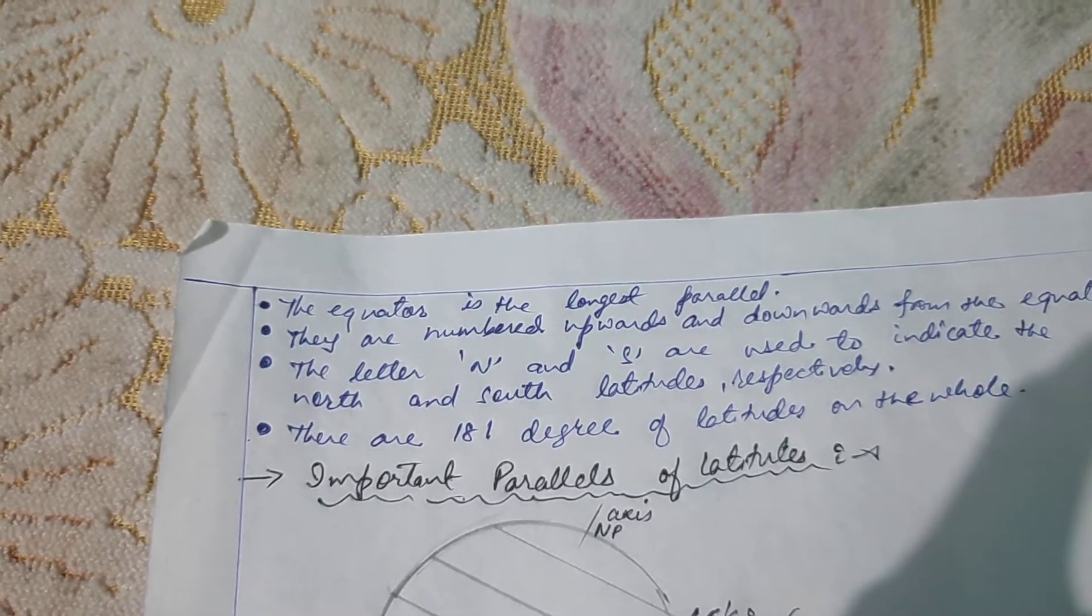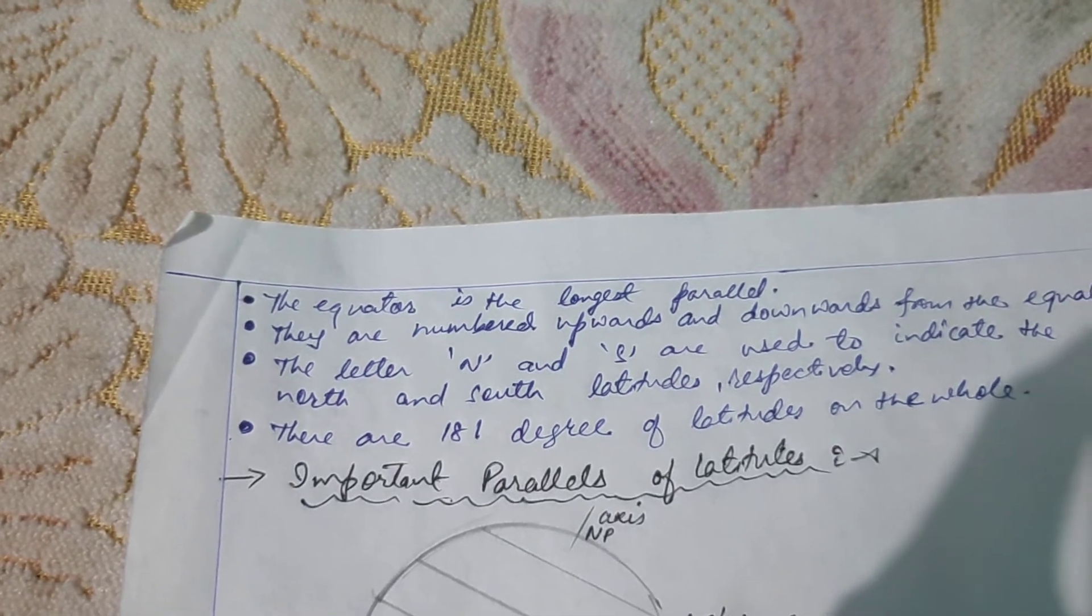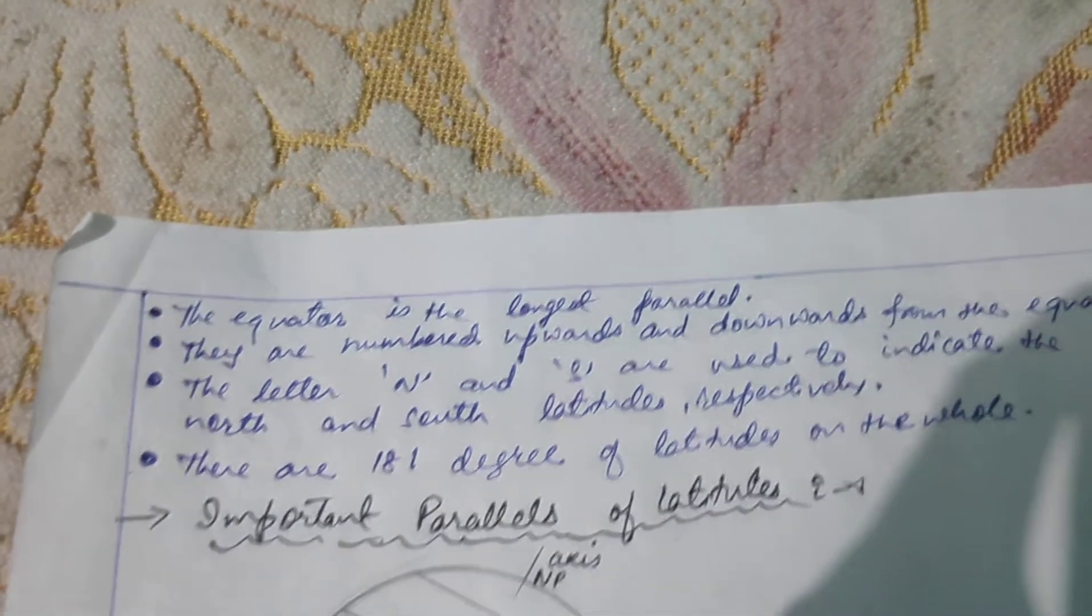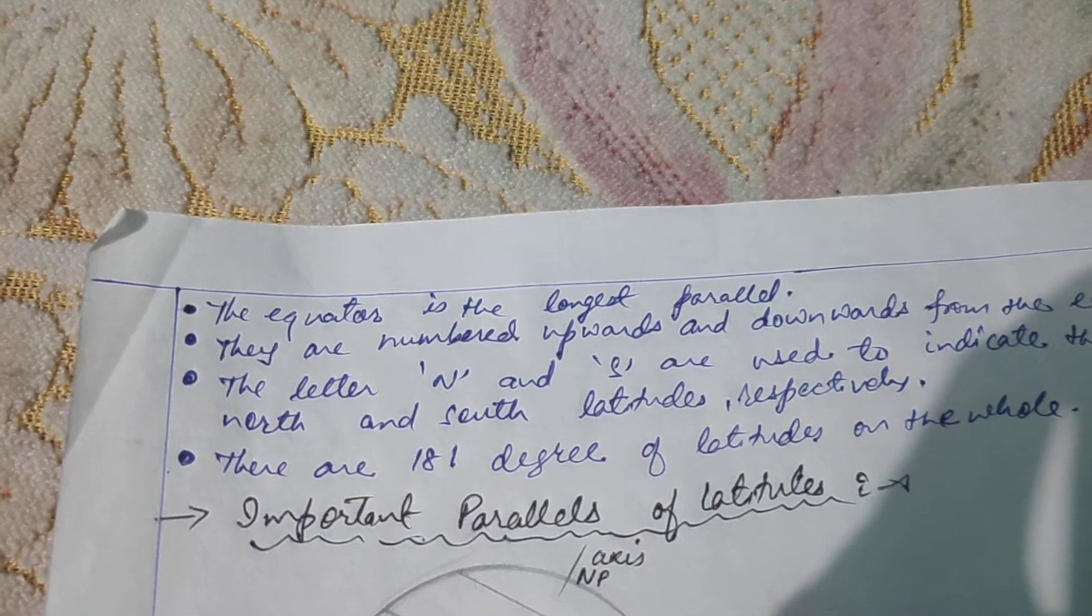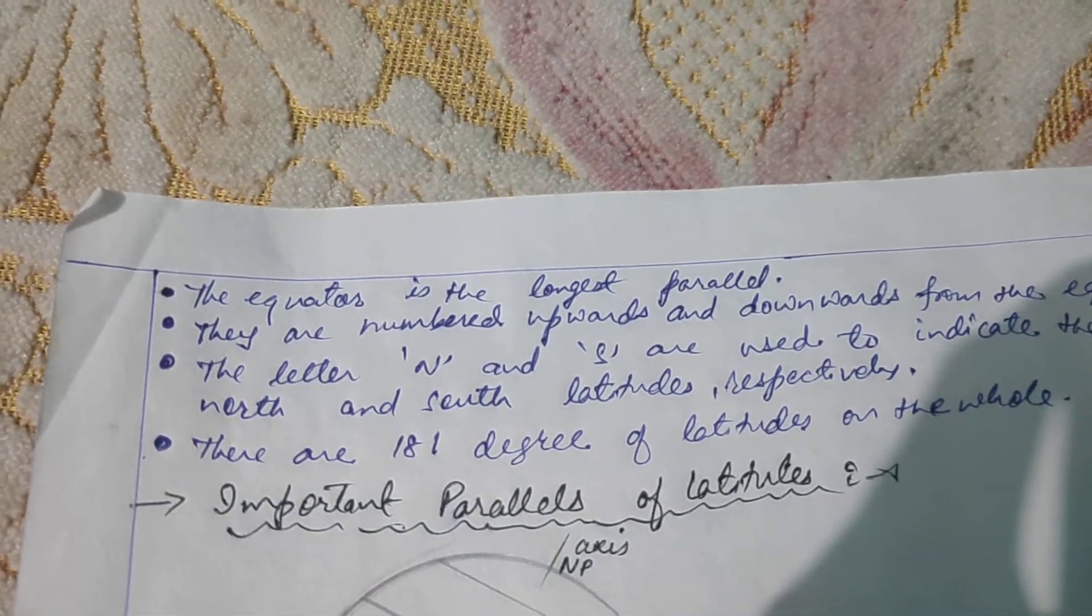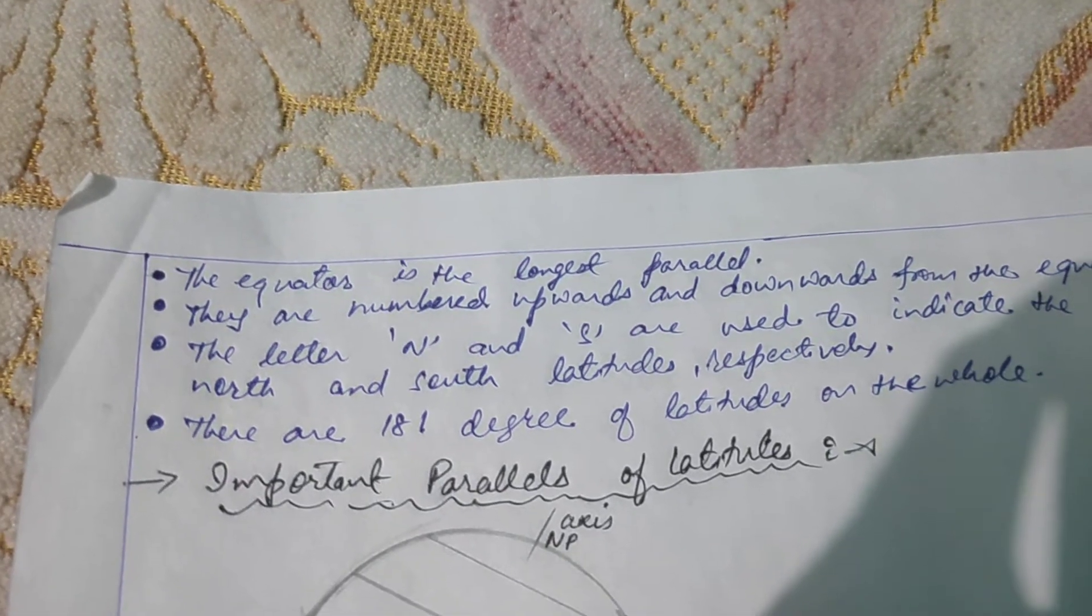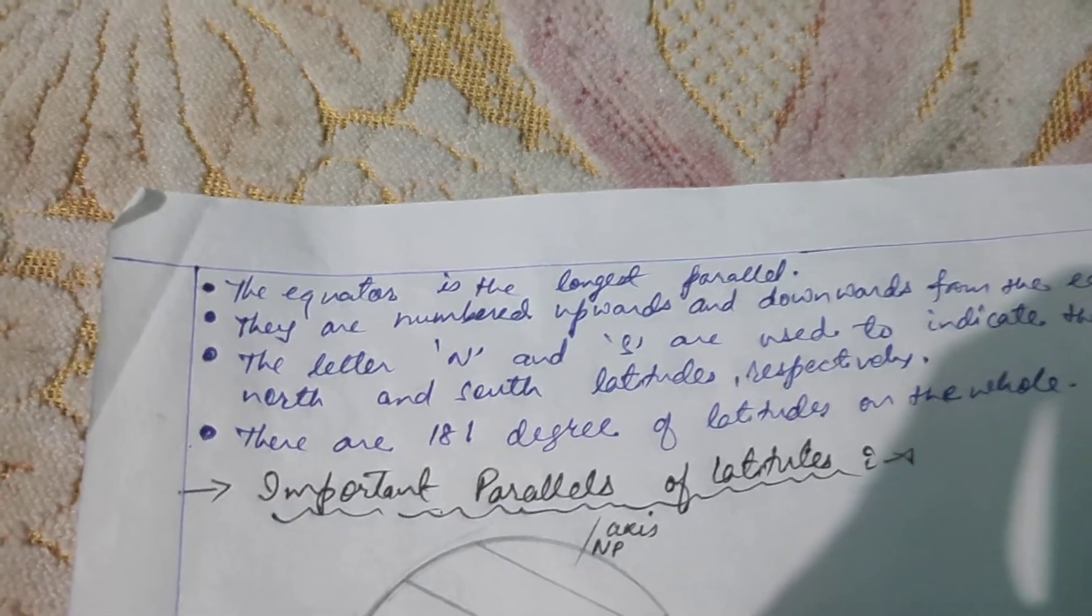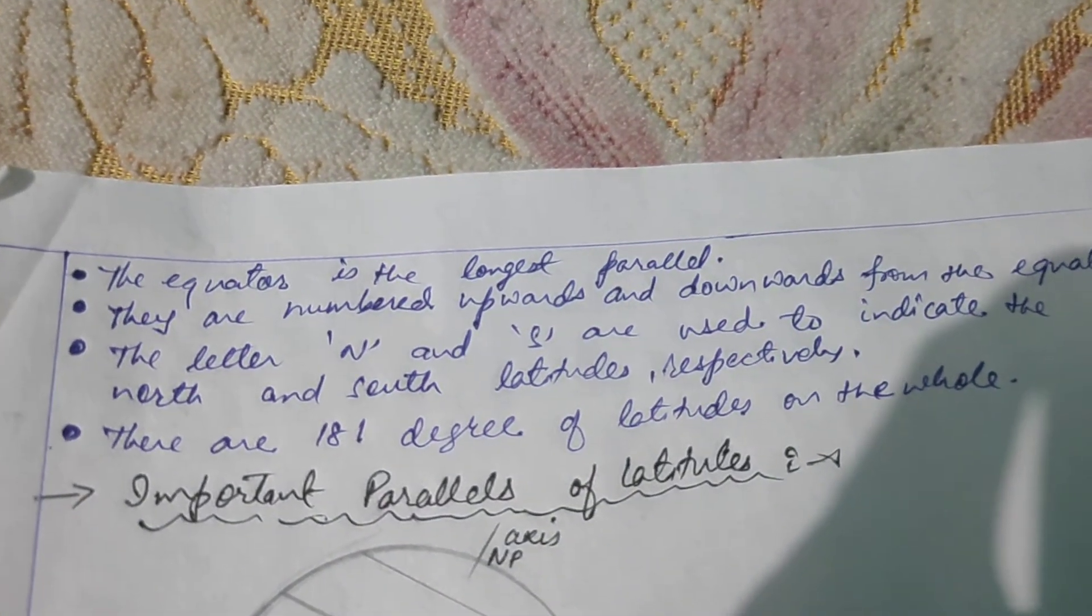The parallels decrease in length from the equator to the poles. The 90 degree north and the south latitude are just dots and represent the north pole and the south pole respectively. These parallels are numbered upwards and downwards from the equator. They increase from 0 degree at the equator to 90 degree at the poles.